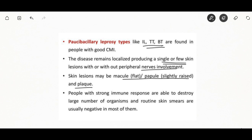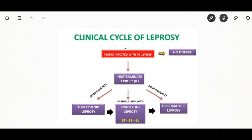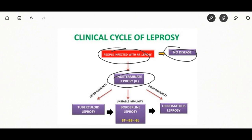Multibacillary leprosy usually spares the central nervous system and upper reproductive system in females. Without treatment, the paucibacillary form may downgrade to multibacillary — from tuberculoid to lepromatous through the full spectrum. People infected with Mycobacterium leprae may show no disease, intermediate leprosy, tuberculoid leprosy with good immunity, or lepromatous leprosy with poor immunity. The intermediate or borderline form is borderline leprosy.